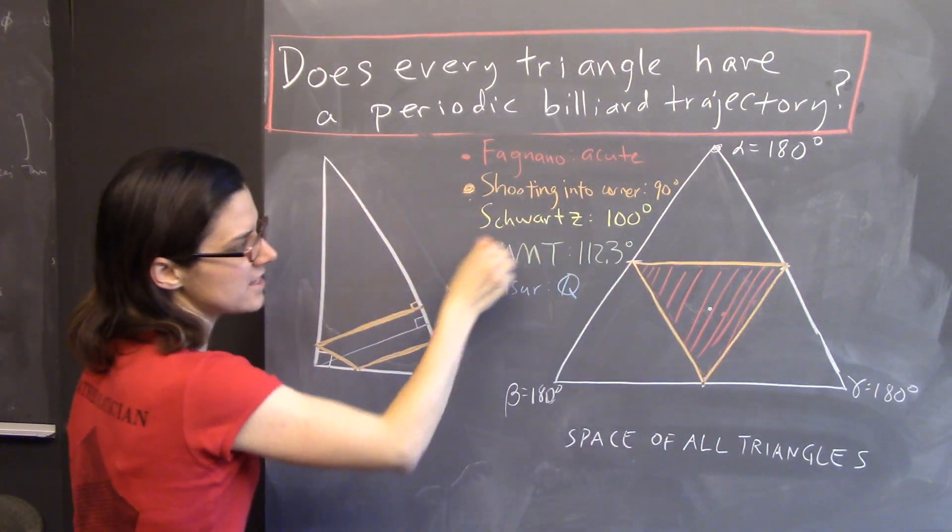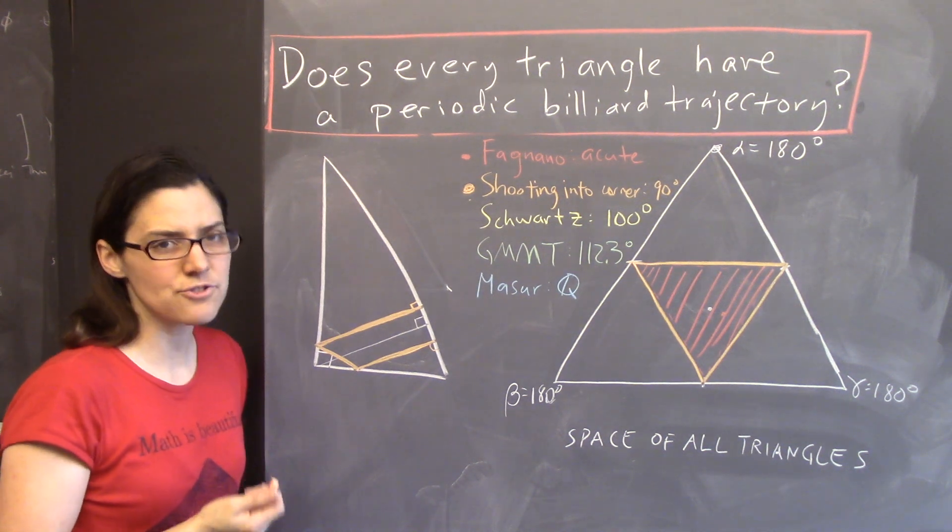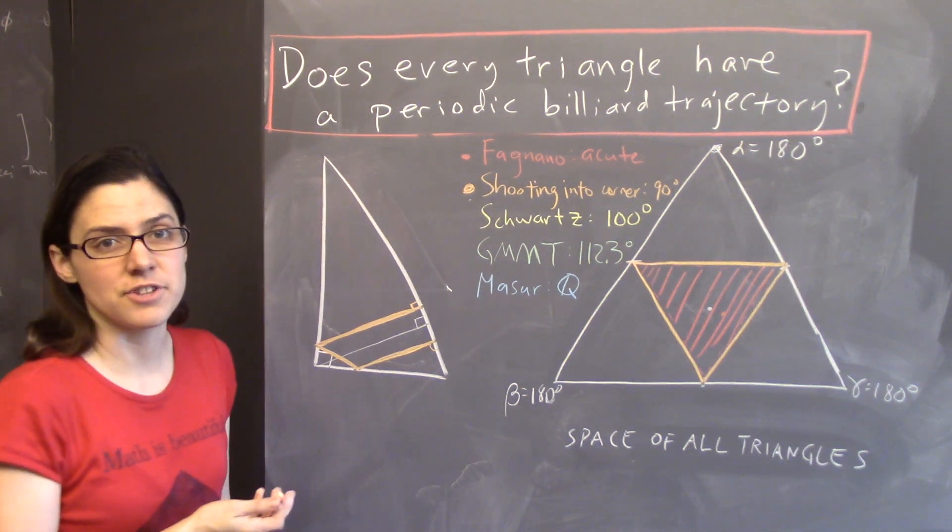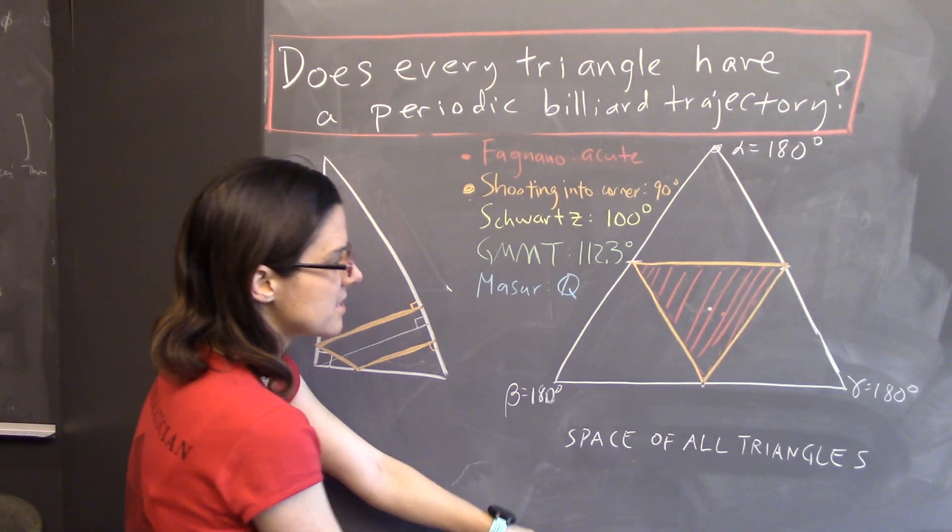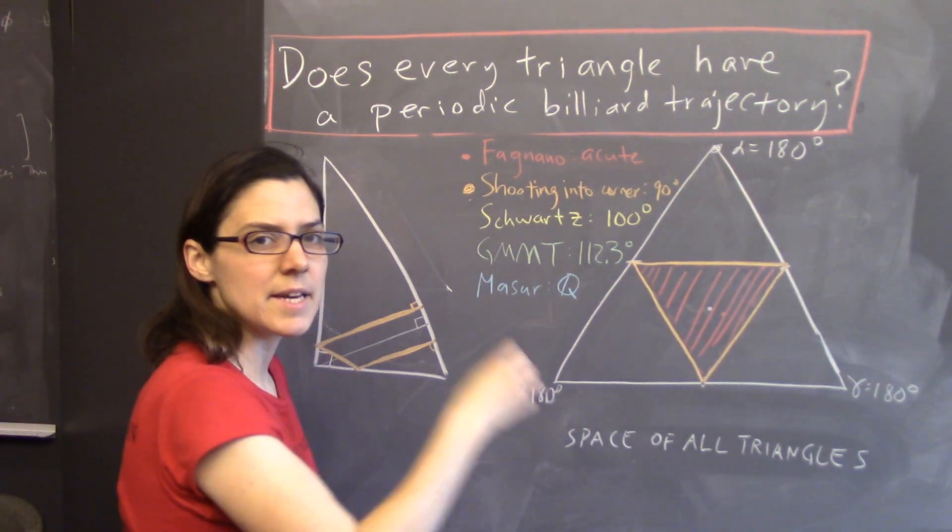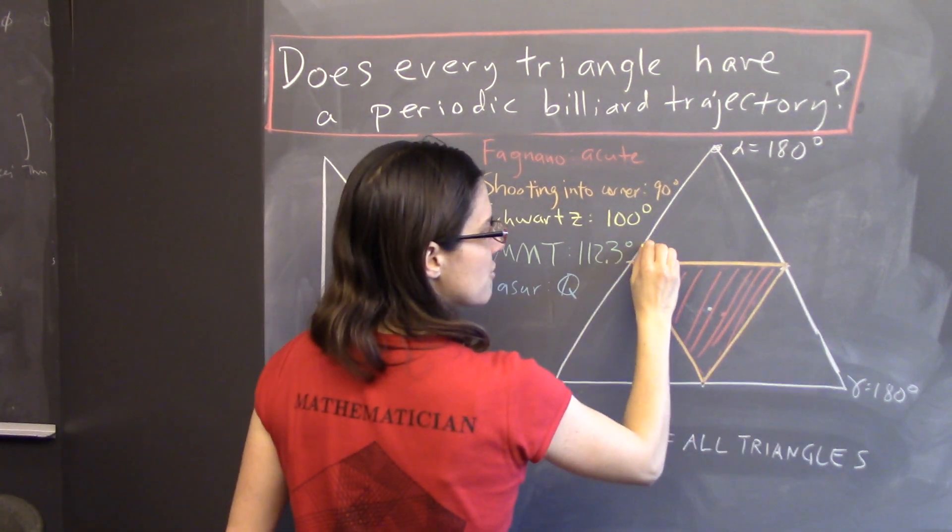He got interested in this problem, and he ended up proving that every triangle whose largest angle is less than 100 degrees has a periodic billiard trajectory. And he did that with a computer-aided proof that broke up the space of triangles into little patches, and proved that within each little patch, all of those triangles had a periodic billiard trajectory.